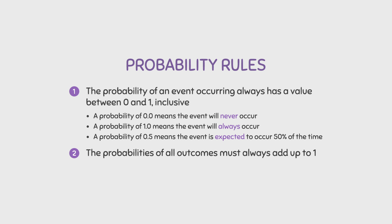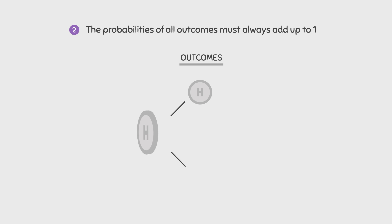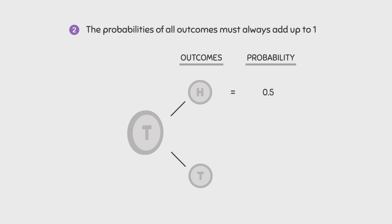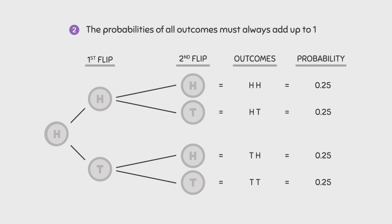The second condition that must be satisfied is that the probabilities of all outcomes must always add up to 1. For example, if we flip a coin, we know that there are two outcomes — getting heads or getting tails. The probability of getting heads is 0.5 and the probability of getting tails is also 0.5. If we add these up, we get a value of 1, which satisfies this condition. If we extend this further and flip a second coin, adding up all the probabilities still gives us a value of 1.